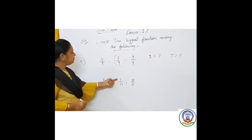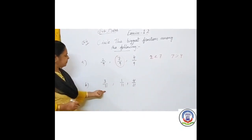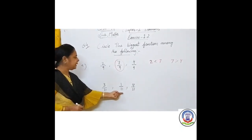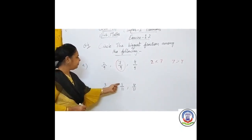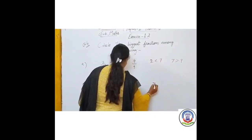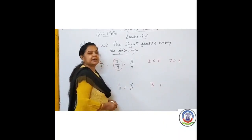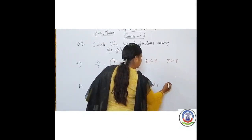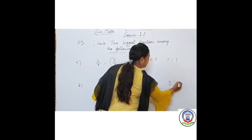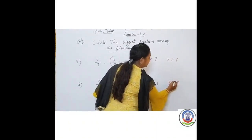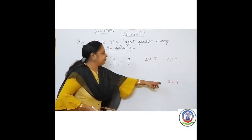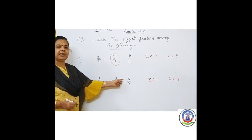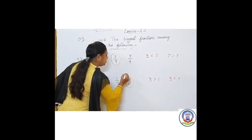Next: 3 upon 11, 1 upon 11, and 4 upon 11. All denominators are 11, so these are like fractions. We compare the numerators: 3, 1, and 4. Comparing 3 and 1, the bigger number is 3. Then comparing 3 and 4, the bigger number is 4. So among 3 upon 11, 1 upon 11, and 4 upon 11, the biggest is 4 upon 11; we circle 4 upon 11.